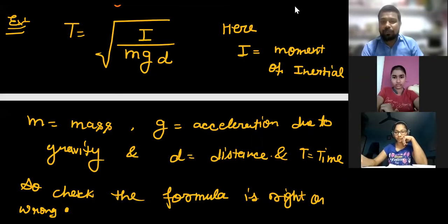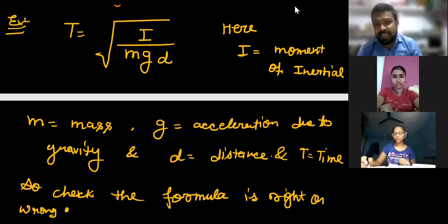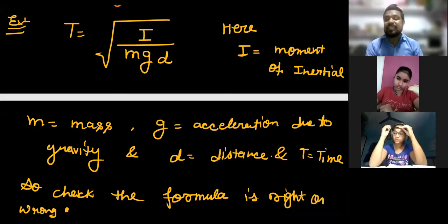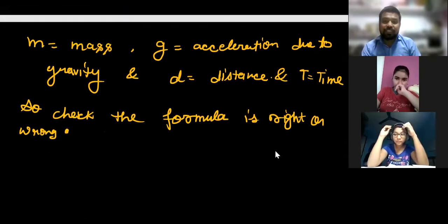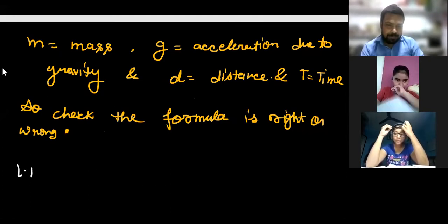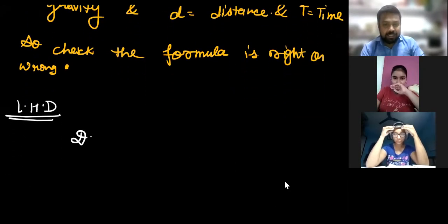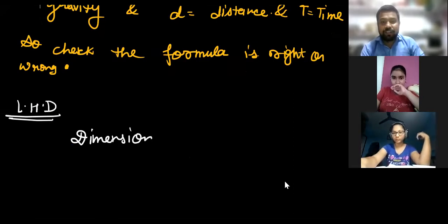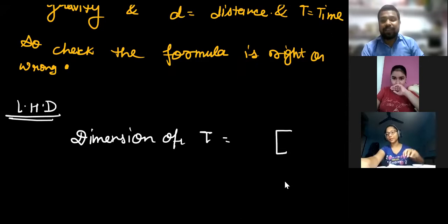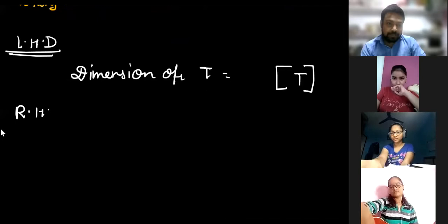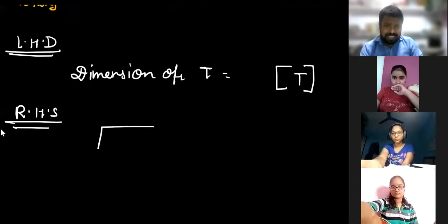Let us check this question: T equals 2 times the square root of I divided by mgd. Here, I is the moment of inertia, m is the mass, g is the acceleration due to gravity, and d is the distance, and T is the time. We need to check whether this formula is right or wrong. First, take the left-hand side dimensions.